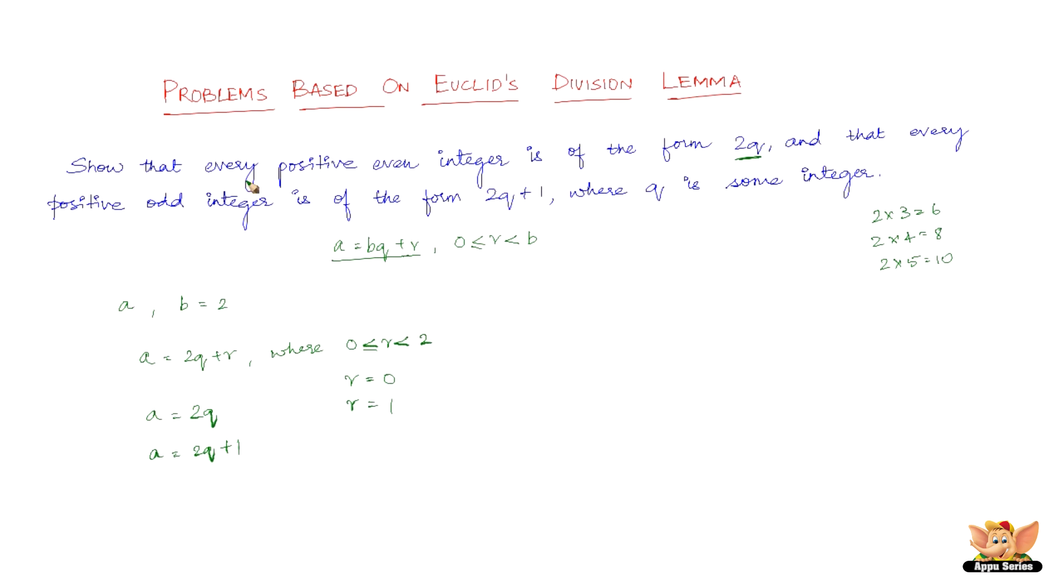So this is how we prove that every positive even integer is of the form 2q and that every positive odd integer is of the form 2q plus 1 by using Euclid's division lemma.